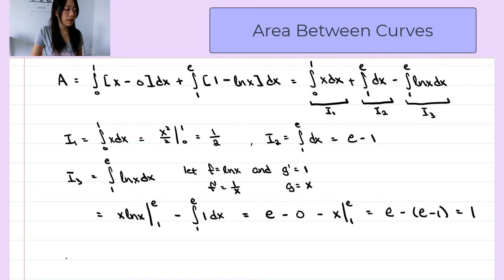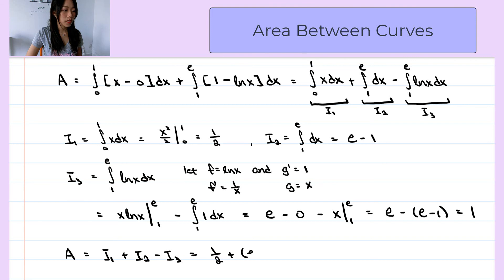Now let's put everything together. The total area is I1 plus I2 minus I3, which is 1 over 2 plus (e minus 1) minus 1, which equals e plus 1 over 2 minus 2, which equals e minus 3 over 2.